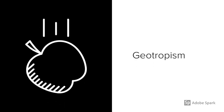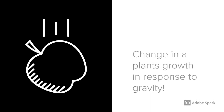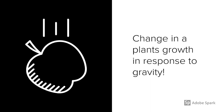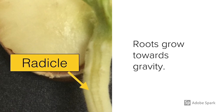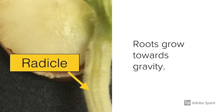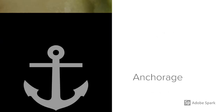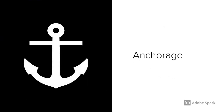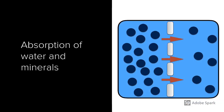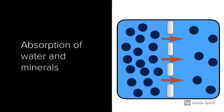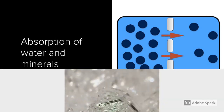The next tropism is geotropism — how a plant will respond to gravity, defined as the change in a plant's growth in response to gravity. The roots are positively geotropic because they grow towards gravity. This is excellent for plant anchorage and is also very important because it ensures the plant will be able to absorb all the water and nutrients it needs from the soil.